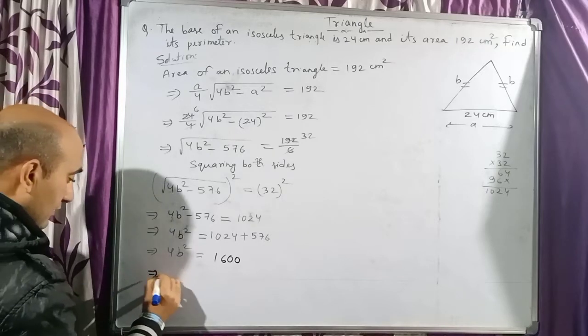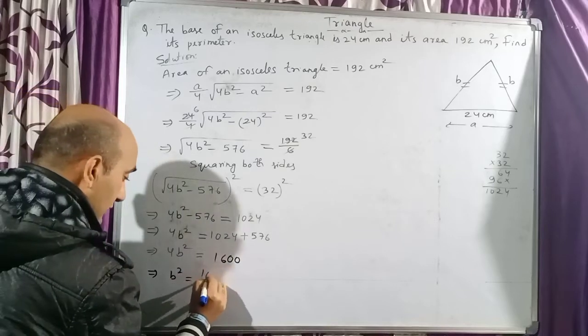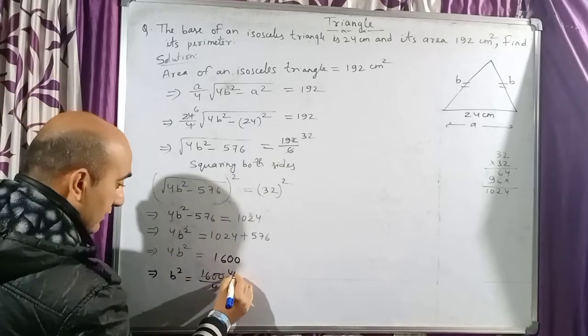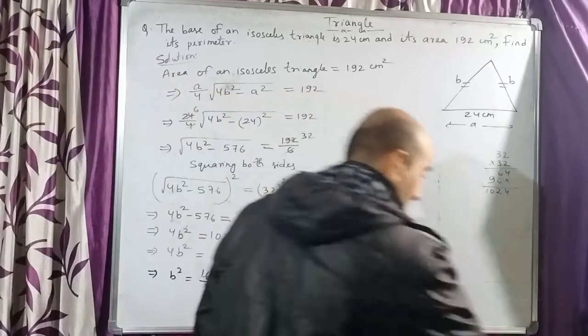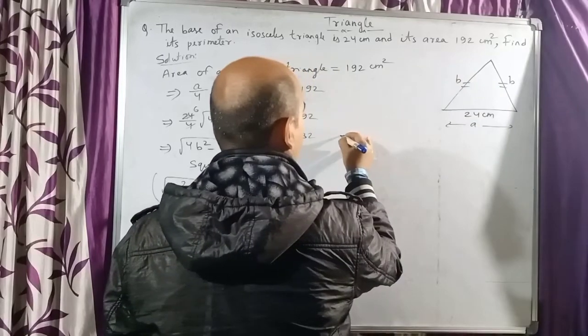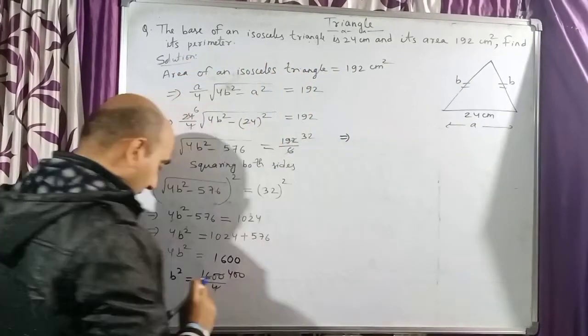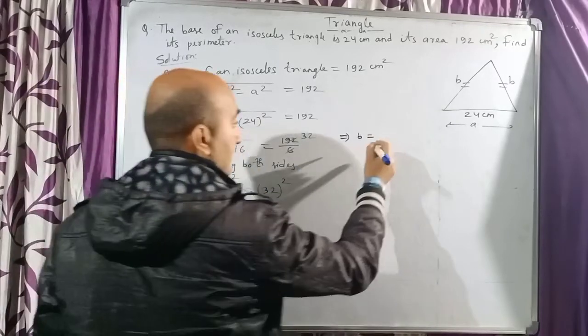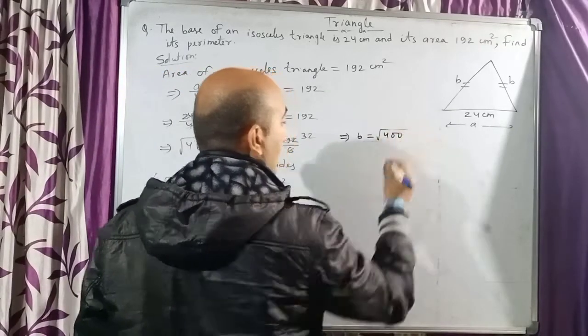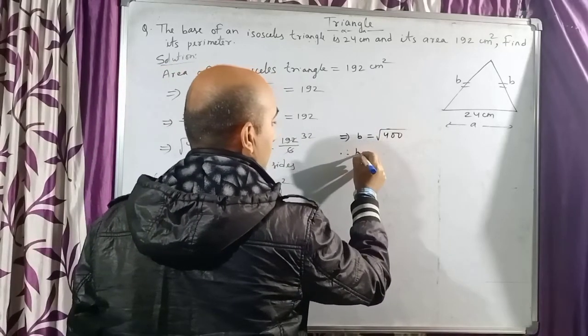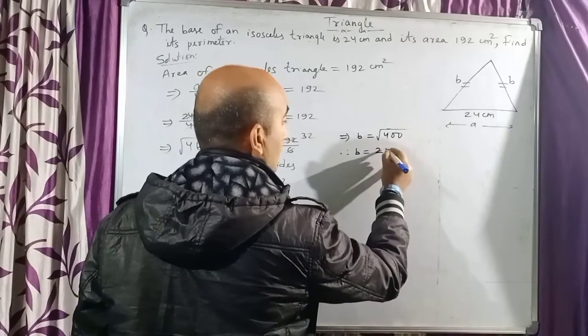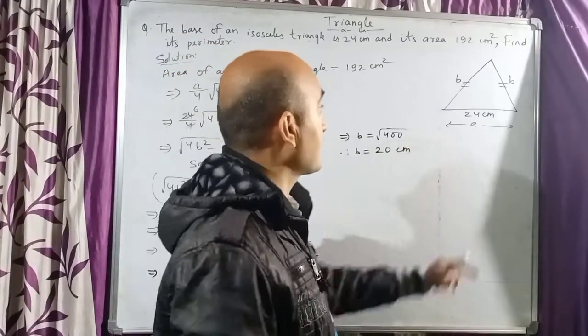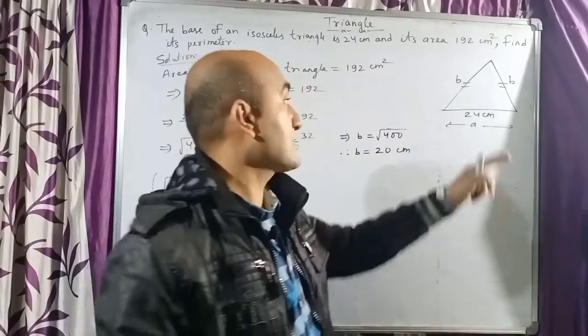Next, b² = 1600/4. This 4 will come and divide. We can write 400 here. For removing the square here, we take root over on the right hand side. So on the right hand side we have 400, and we will get root over. Therefore, b = √400 = 20. So b equals 20 centimeters. That means the value of b is 20, so this side is 20, this side is 20, and this base is 24.